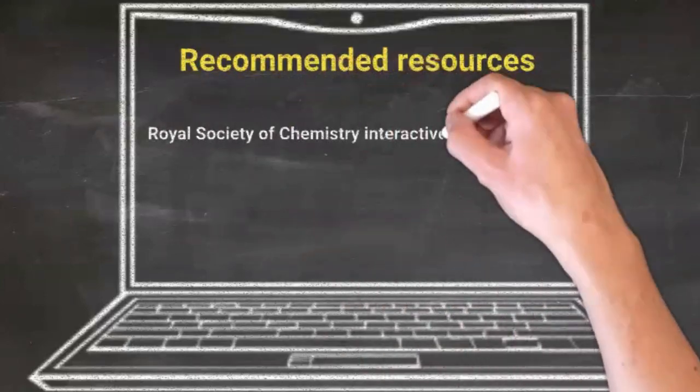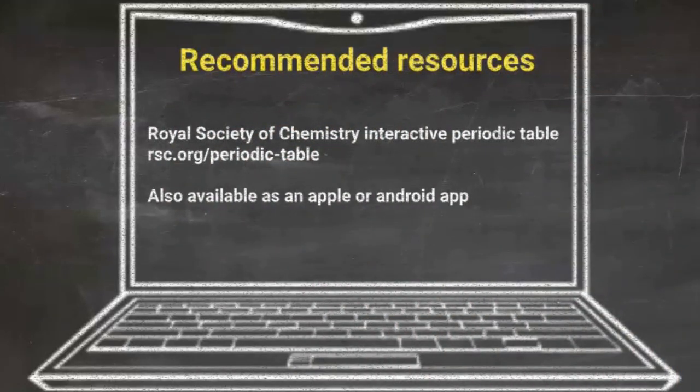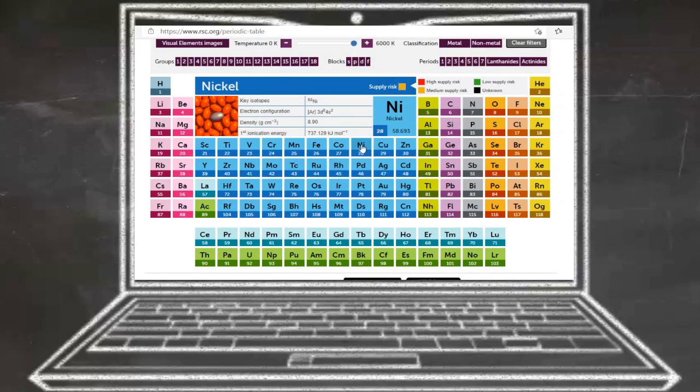There are many resources available online, but there are few that are better than the Royal Society of Chemistry's interactive periodic table. All of the information discussed in this video is available and more. You can see each element as you mouse over, and here's our old friend cobalt.